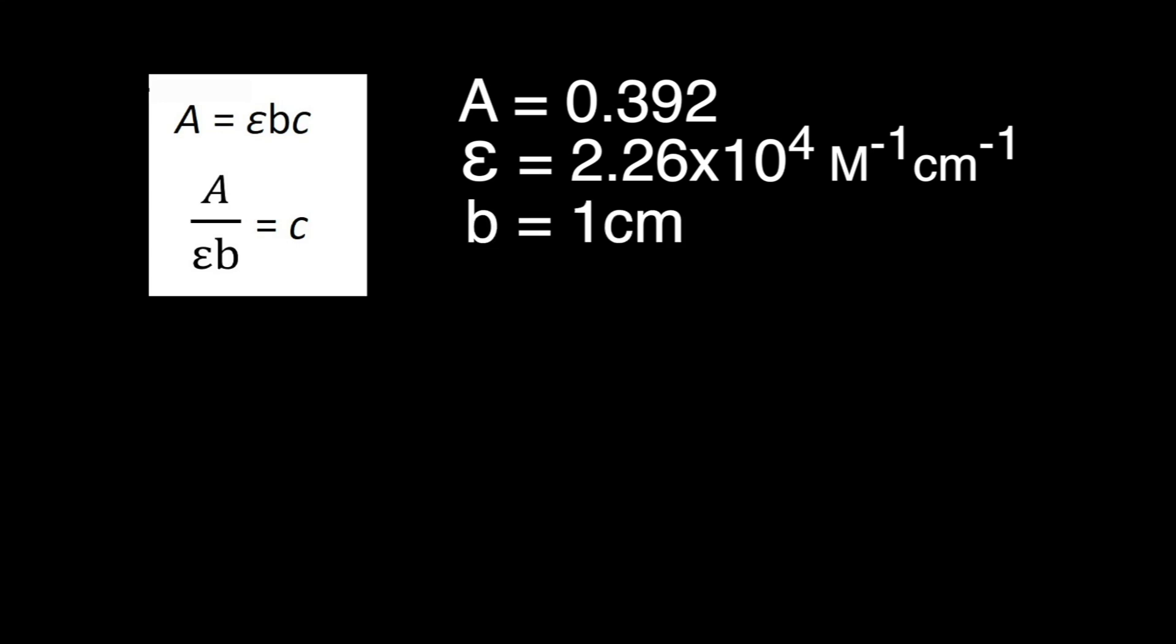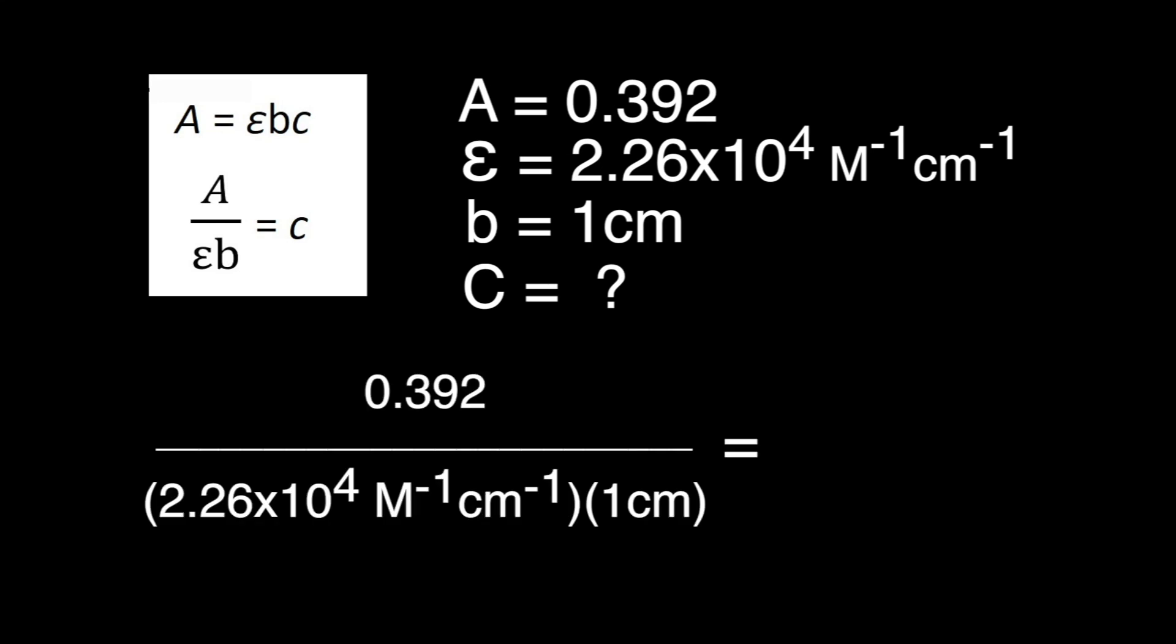Here, our unknown solution gave an absorbance of 0.392. We know the molar absorptivity is 2.26 times 10 to the 4th, and the path length is 1. What would its concentration be? Did you get 1.73 times 10 to the minus 5 molar when you performed the calculation?